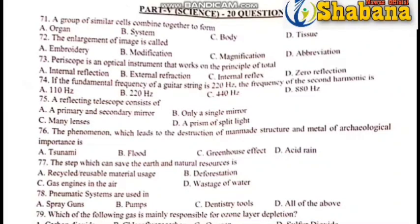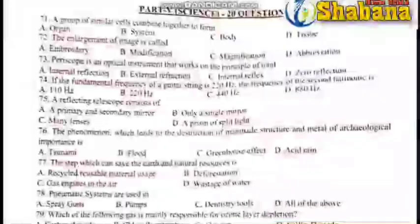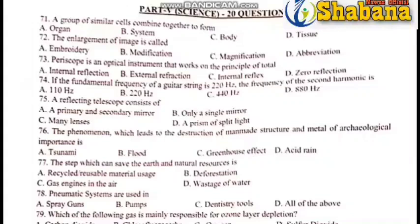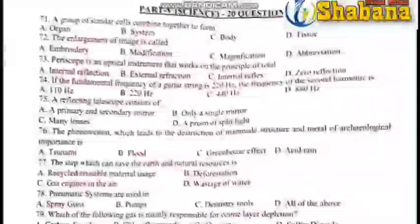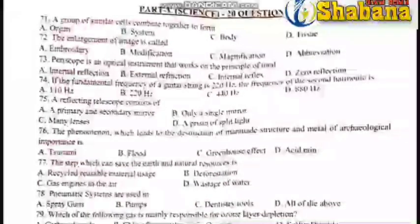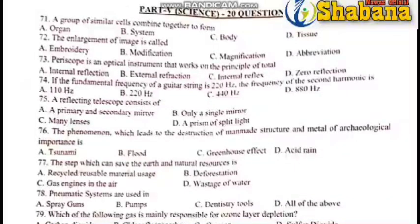Question number 74: If the fundamental frequency of a guitar string is 220 Hz, the frequency of the second harmonic is — it is always called 2, multiplied by 2. The frequency is multiplied by the harmonic number. So the answer is 440 Hz.